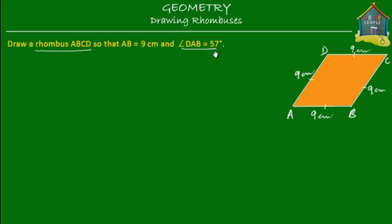What we know is angle DAB is 57 degrees — this angle at vertex A is 57 degrees. What else we know about this rhombus, or any rhombus, is that the opposite sides are parallel. So AB will be parallel to DC, and AD will be parallel to BC.